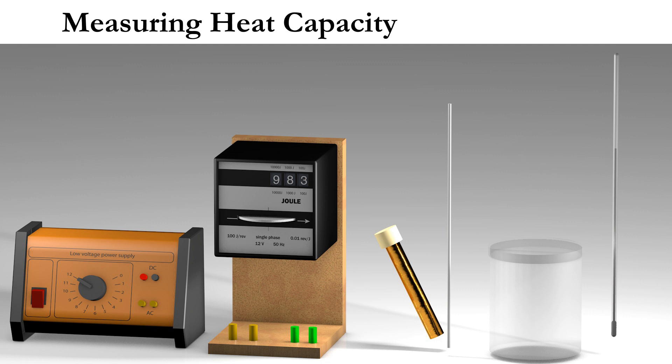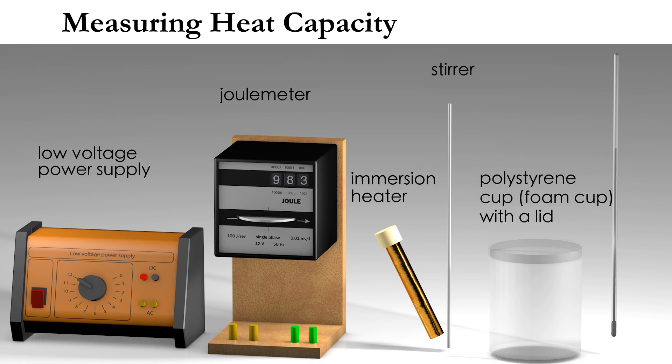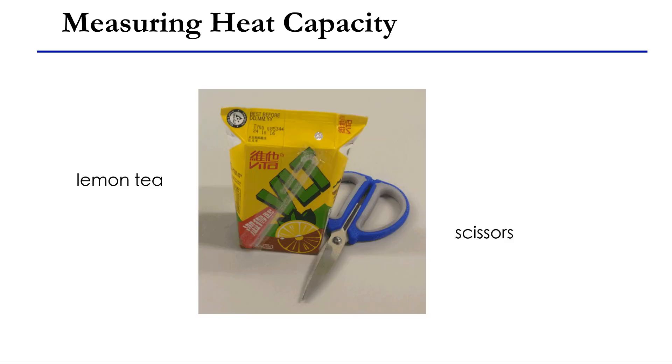The apparatus used in this experiment includes a power supply, a joulemeter, an immersion heater, a stirrer, a polystyrene cup, also called a foam cup with a lid, a thermometer, a pair of scissors, and of course, a pack of lemon tea.